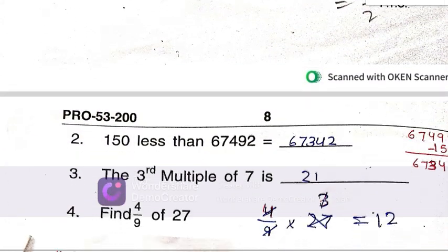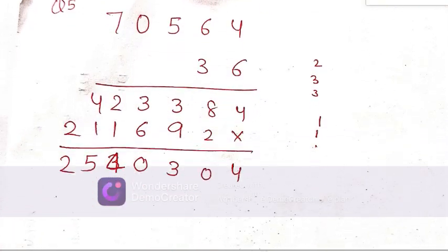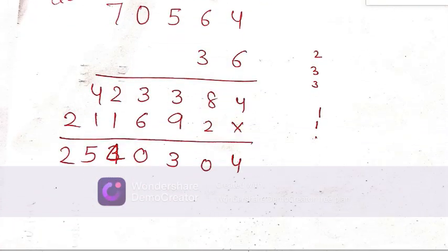Moving towards the next: 150 less than 67492, so less than means minus. Third multiple of 7 means 7 threes are 21. Find 4 by 9 of 27: cross multiply, 9 threes are 27 and 3 fours are 12, so 12 is the answer.